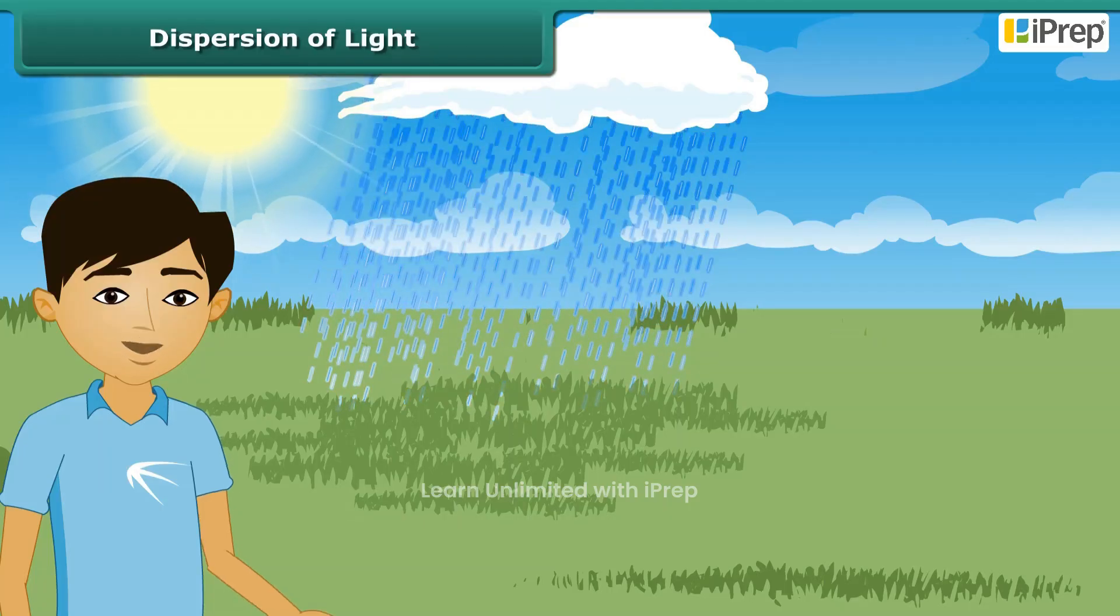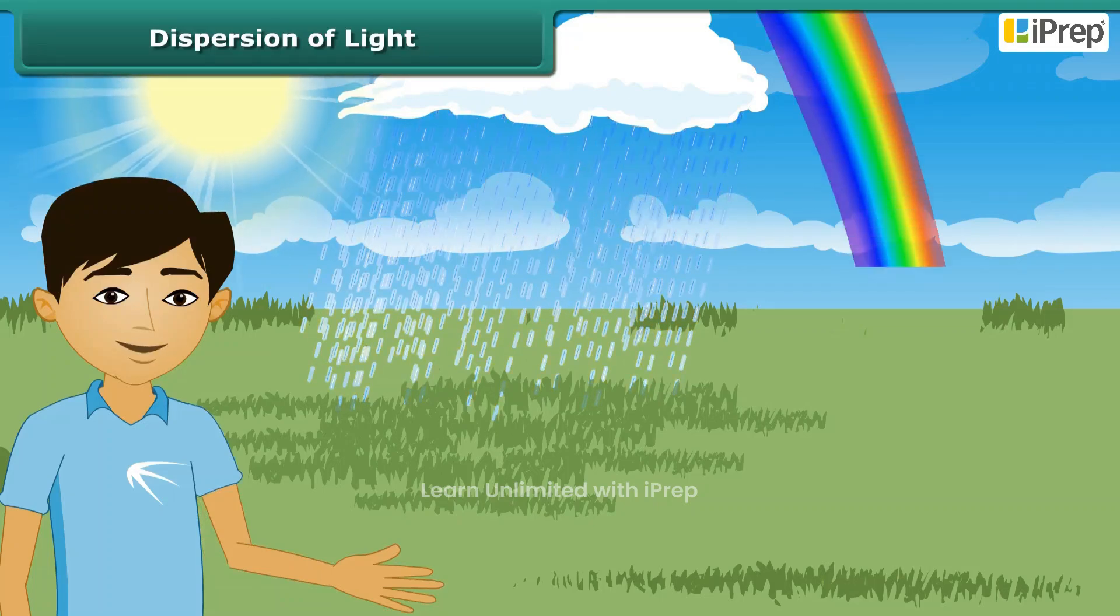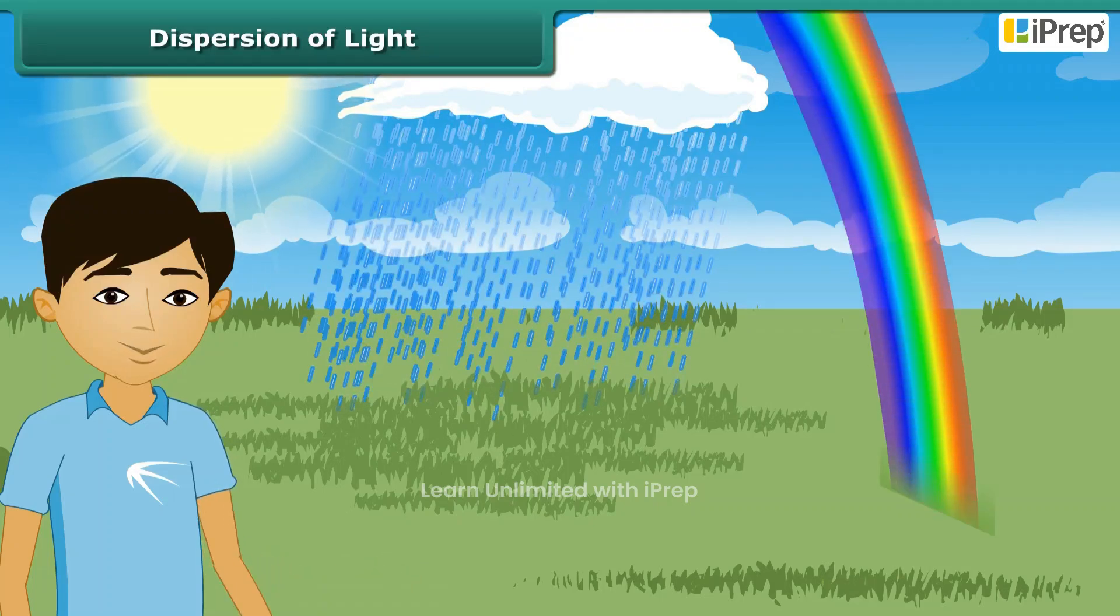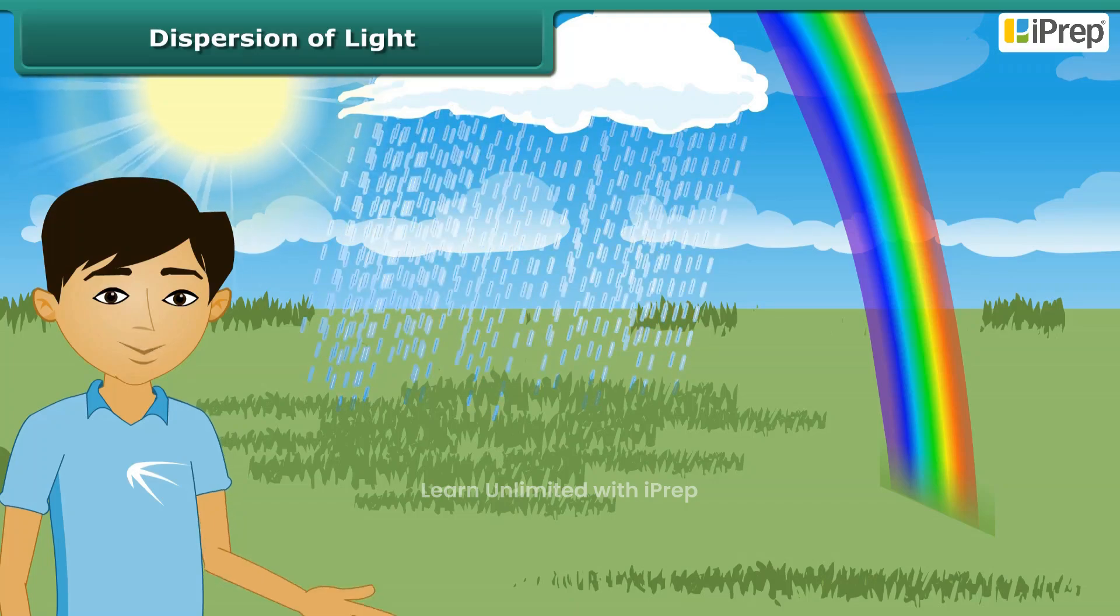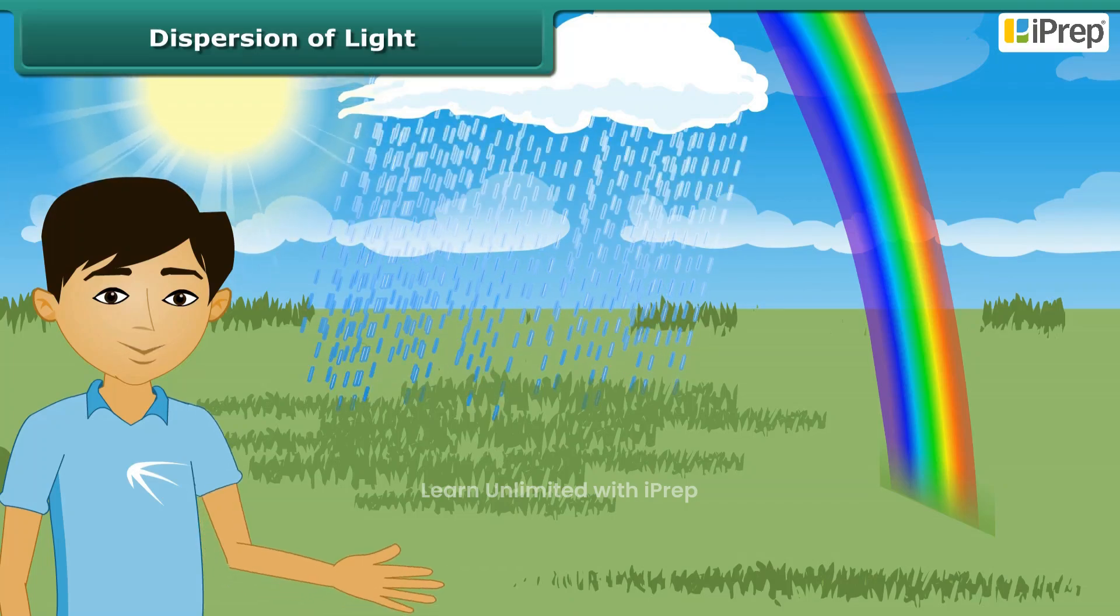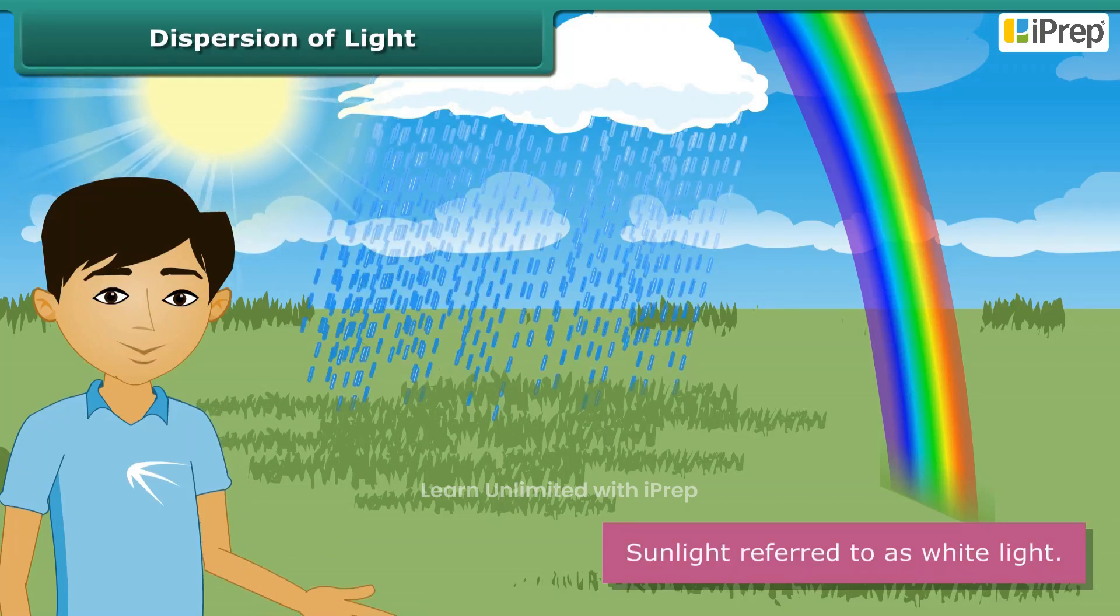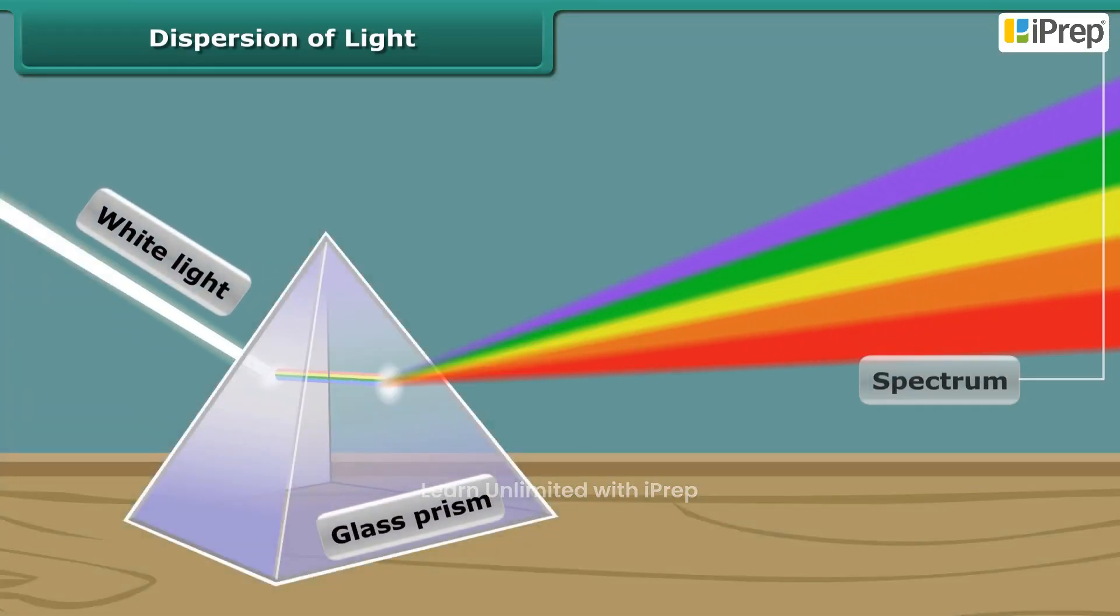What do we observe in the sky after rainfall? Yes, a beautiful multiple colored rainbow. But where did all these colors come from? We know that sunlight is referred to as white light. When this light passes through a glass prism, the light splits into seven colors.